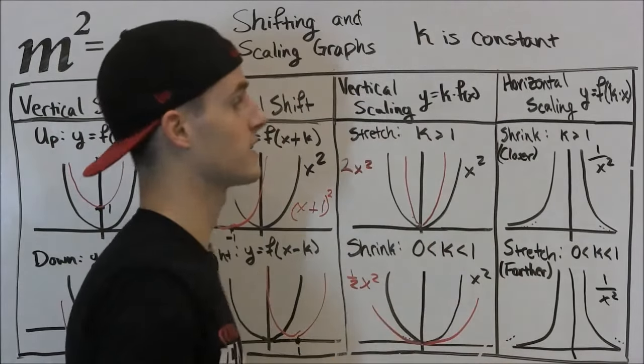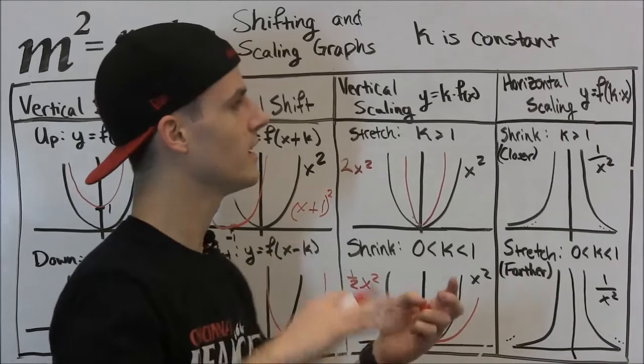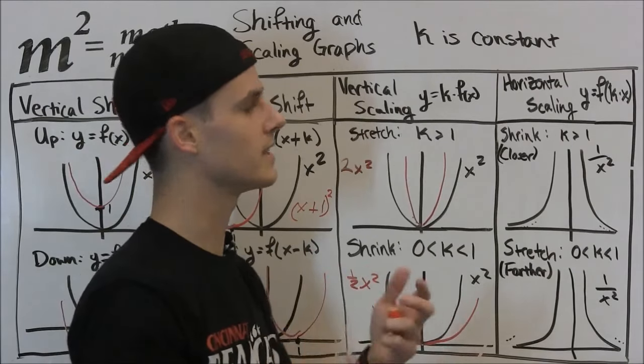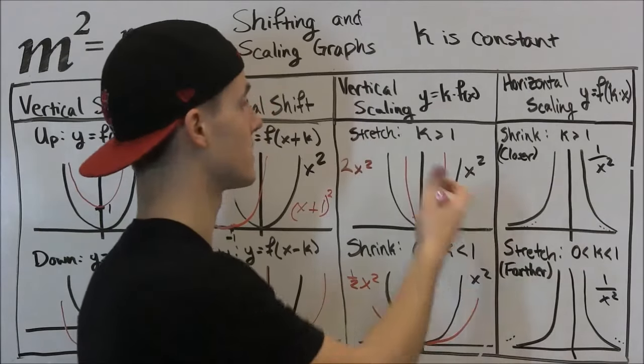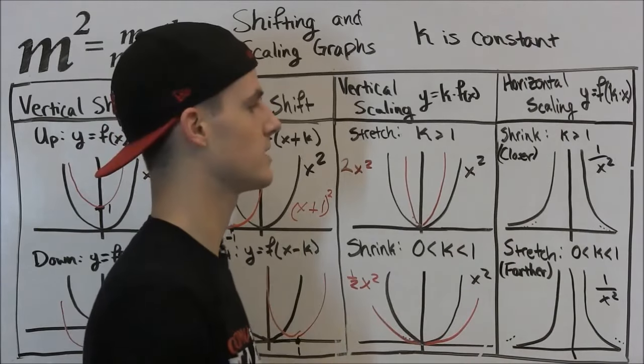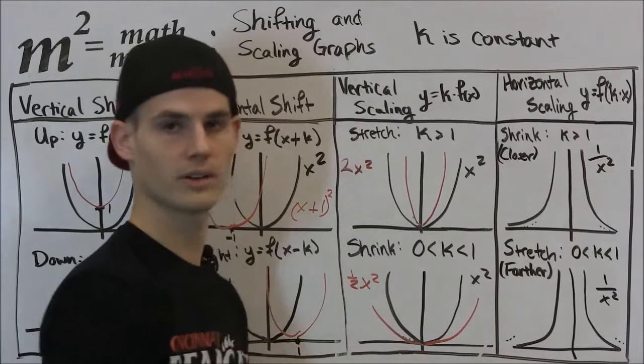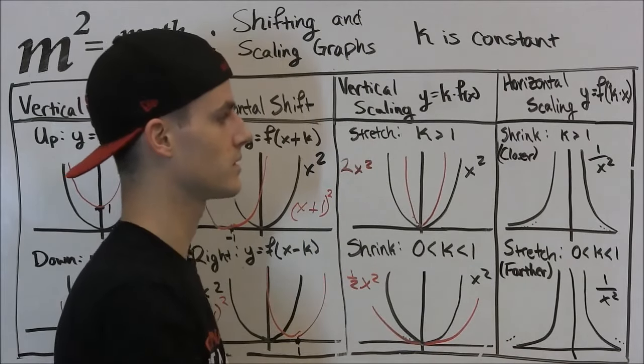Now, this is where things get really confusing. Horizontal scaling. It's kind of explained properly in the book, but this is where certain examples, it's the same as vertical scaling, sometimes it's not. So this is an example of 1 over x squared. This is a good example of when this will actually apply.